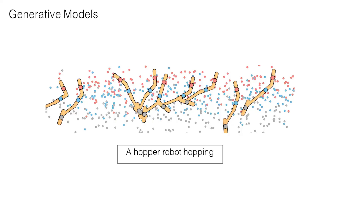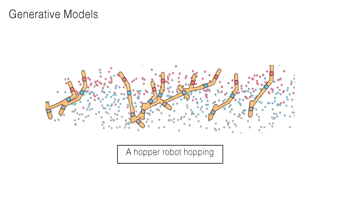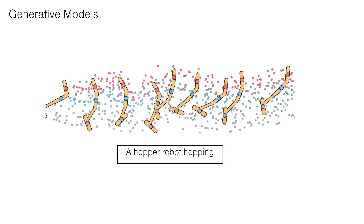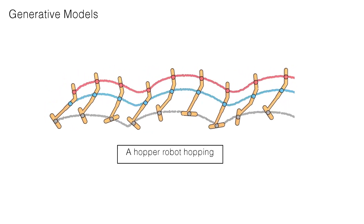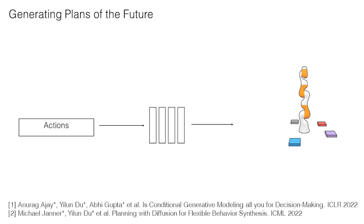Let's say I want a robot to hop along a trajectory. My text description is 'a hopper robot hopping.' What I can do is generate a trajectory of actions that I want to act in the environment, which will synthesize the motion I desire.